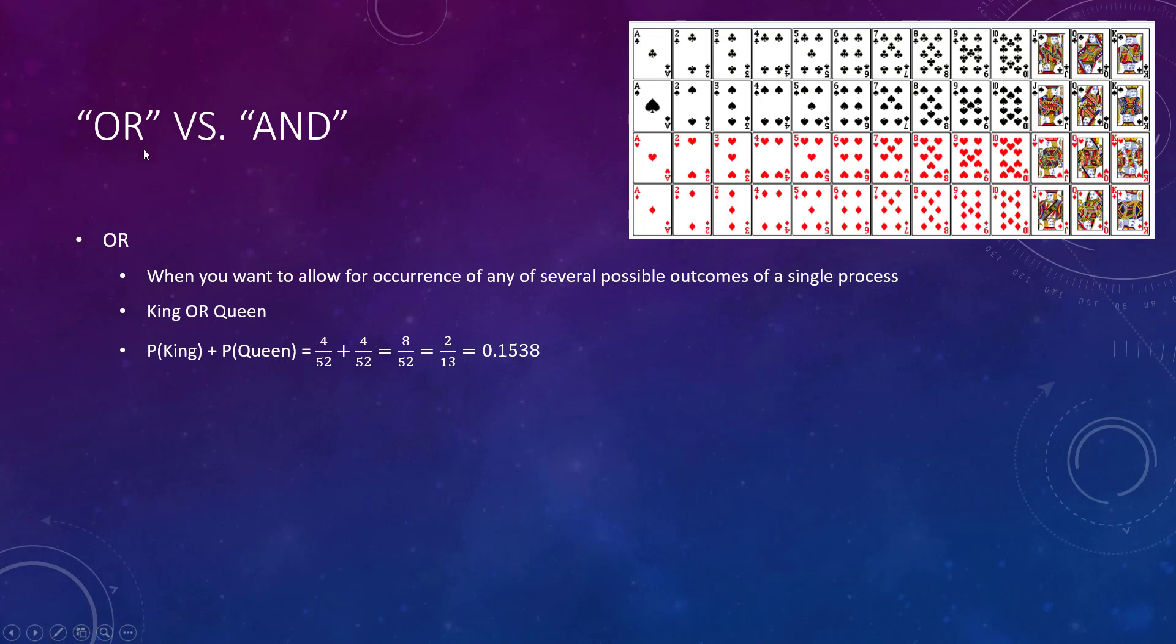Two big keywords in probability: OR and AND. OR means to add, AND means to multiply. This is very important. What's the probability you get a king or a queen? There's four kings out of 52 total cards, or you get a queen, four out of 52.